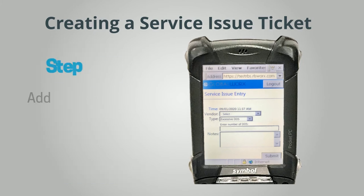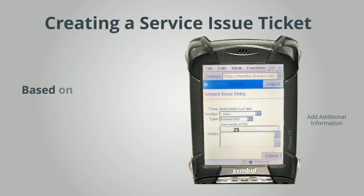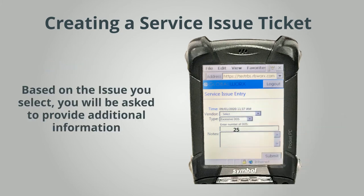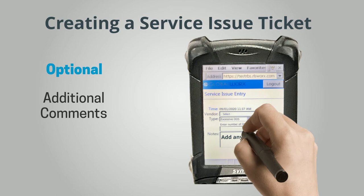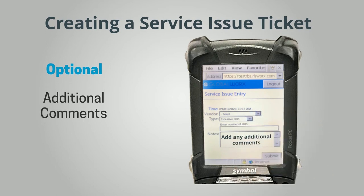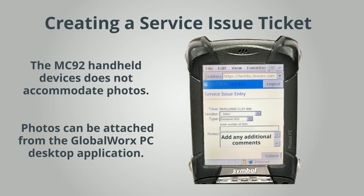Step 4: Add Requested Information. Based on the issue you select, you will be asked to provide additional information. Additional Comments is an optional step where you can add free form text if necessary. Note that the MC92 Handheld devices do not accommodate photos. Photos can be attached from the Global Works PC desktop application.